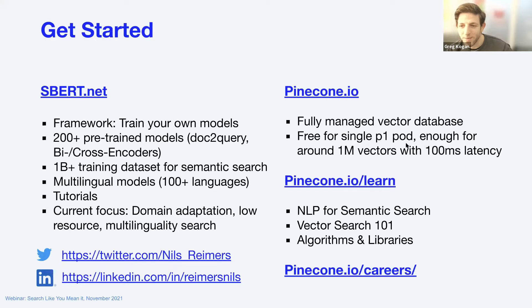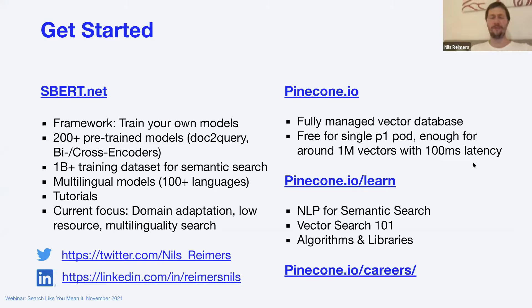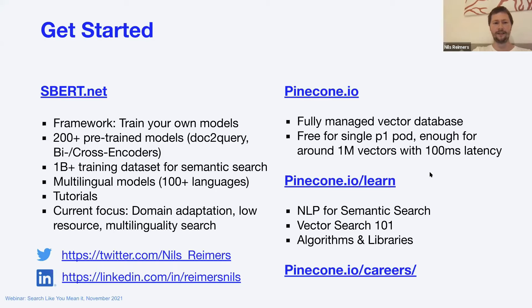The last question, from Pratibha: your opinion on BERT versus RoBERTa? Niels: for embeddings, I did not notice a big difference — they perform similarly. My favorite model currently, which performs best, is MPNet from Microsoft. It has the same size and architecture as BERT but uses a different pre-training approach. If you want a small, efficient model, I like MiniLM — also from Microsoft — with the same architecture as BERT but reduced to six layers and 384 dimensions. These are my two favorite models for embedding tasks: MPNet and MiniLM.